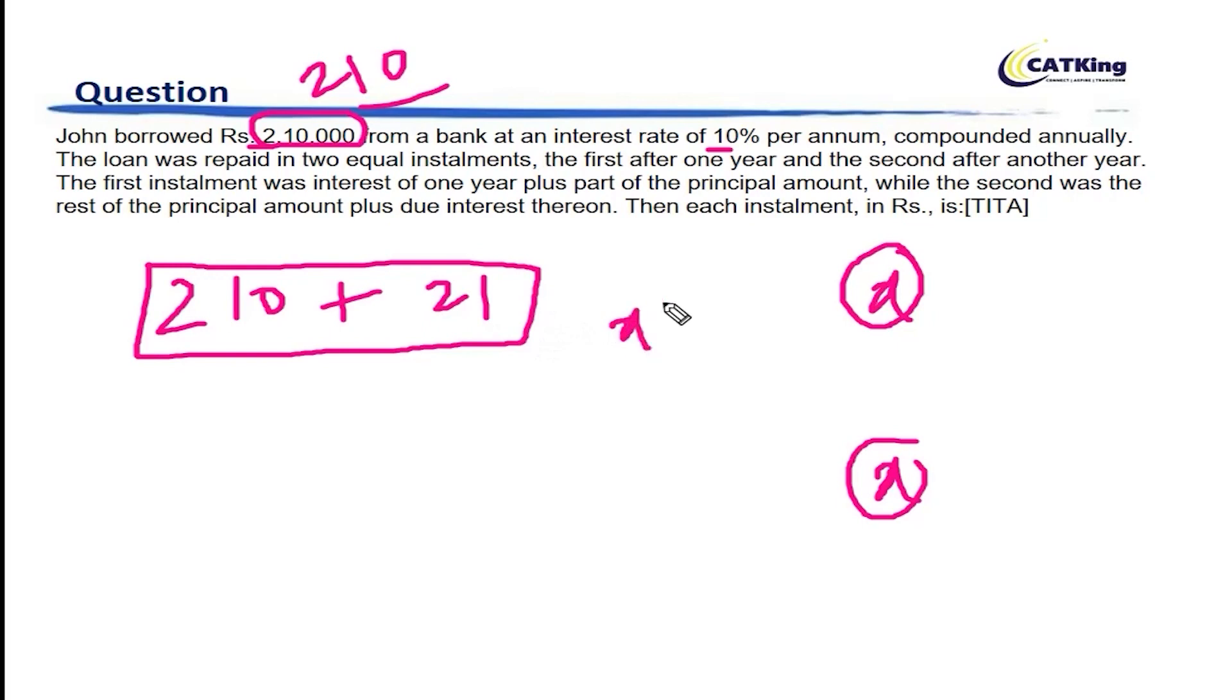Out of this, X amount is paid. So, for the next year, interest calculation will happen on 231 minus X. This one into 1.1. Why 1.1? This amount plus 10% of this amount, which is the interest rate, should be equal to the next installment, which is X.